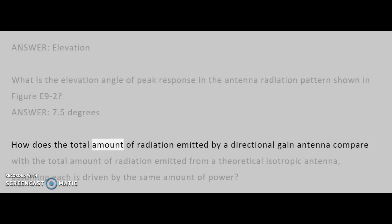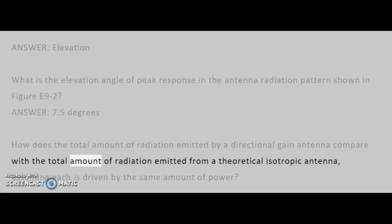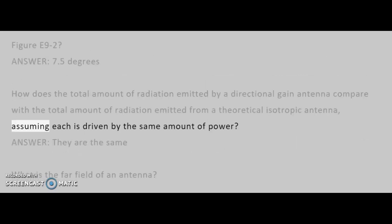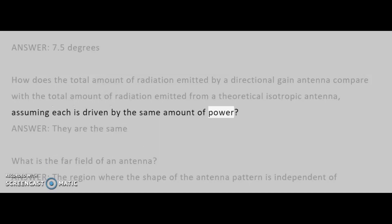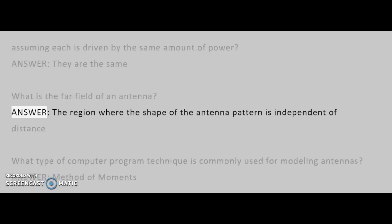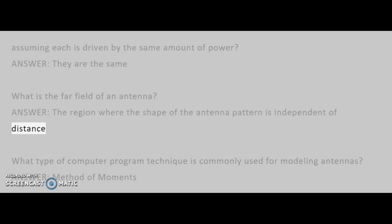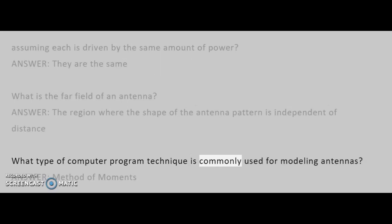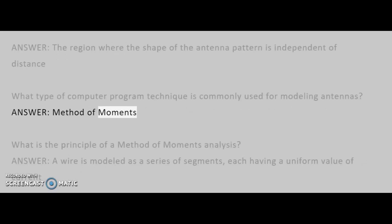How does the total amount of radiation emitted by a directional gain antenna compare with the total amount of radiation emitted from a theoretical isotropic antenna, assuming each is driven by the same amount of power? Answer: they are the same. What is the far field of an antenna? Answer: the region where the shape of the antenna pattern is independent of distance. What type of computer program technique is commonly used for modeling antennas? Answer: method of moments.